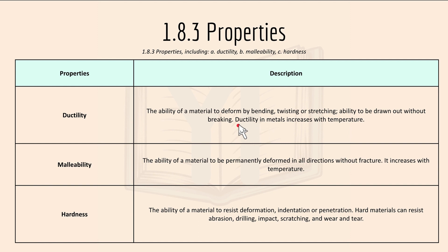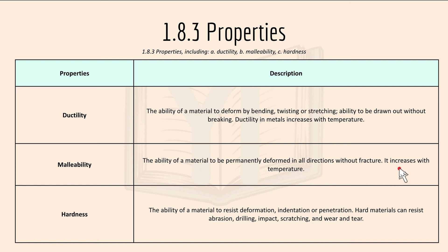Ductility in metals increases with temperature. Malleability is the ability of a material to be permanently deformed in all directions without fracture, and it also increases with temperature.